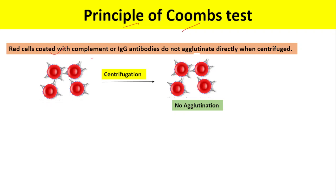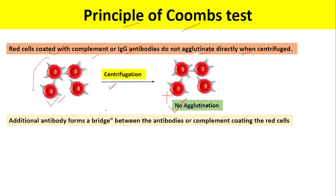The principle of the Coombs test is as follows: red blood cells coated with complement or IgG antibodies do not agglutinate directly when centrifuged. So when we centrifuge the RBCs coated with antibodies, no agglutination or clumping of RBCs occurs. Therefore, we need the help of a third agent, called the Coombs reagent.